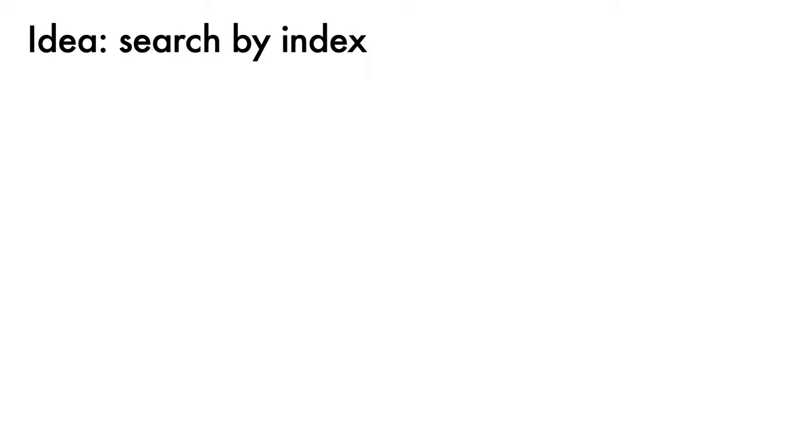In order to get the promised impressive operational speed for hash tables, the key idea is to replace searching, which can be a laborious process, with array indexing, which is very fast. This idea may not be intuitive, so let's walk through an example.